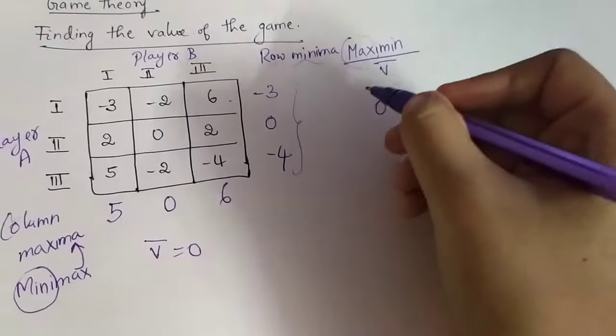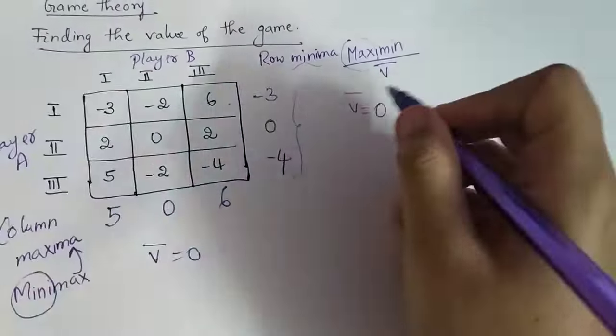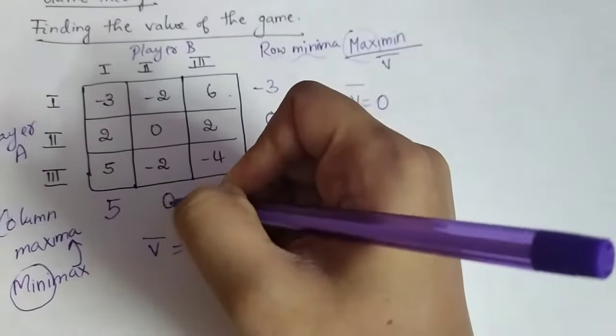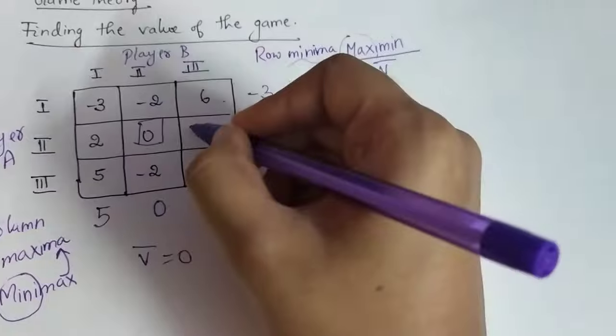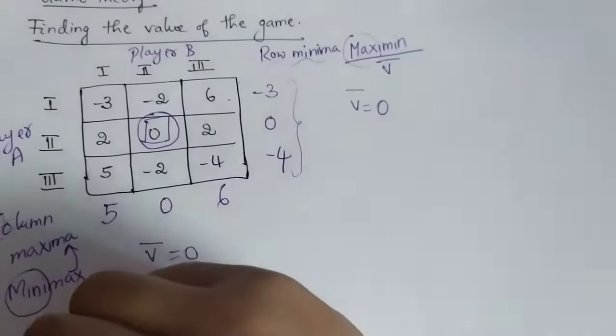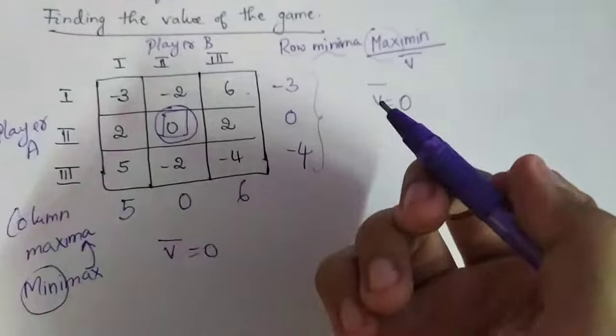You found out that here you also have zero and here also you have zero. This zero corresponds to this cell value. Here it corresponds to this cell value. Therefore the value of the game is zero.